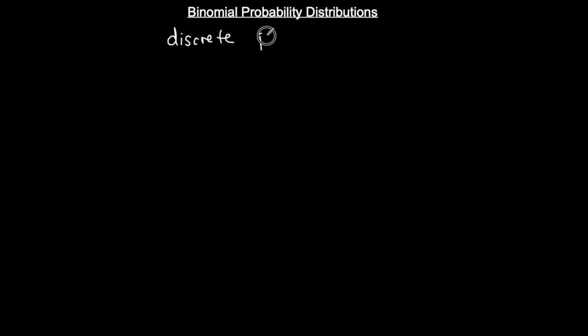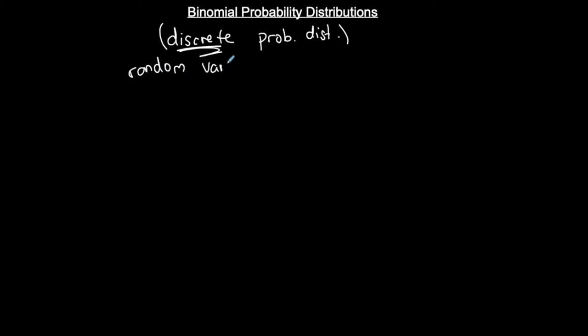I want to talk about binomial probability distributions. These are a discrete probability distribution. Discrete means finite, countable outcomes — outcomes that are whole numbers. Your random variables are whole numbers, finite or countable.